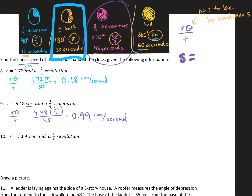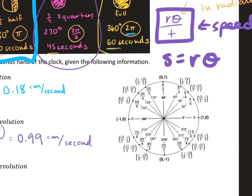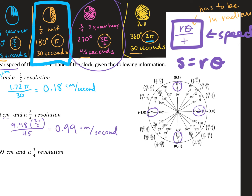Know your arc length formula: s = rθ. For linear speed, it's V = rθ/t. To remember the radian values: a quarter revolution is π/2, half is π, three-quarters is 3π/2, and a full circle is 2π. For time in seconds, all the way around a clock is 60 seconds, so halfway is 30 — just think about it that way.